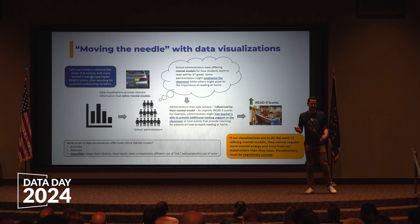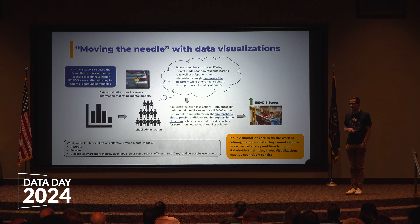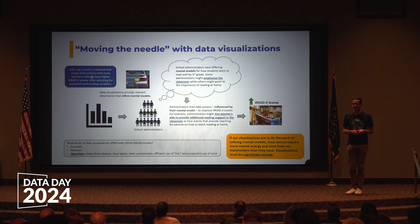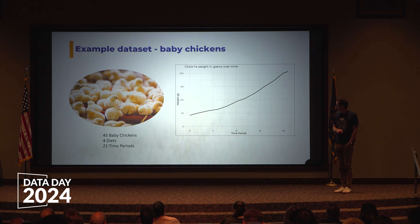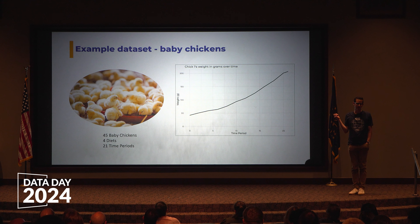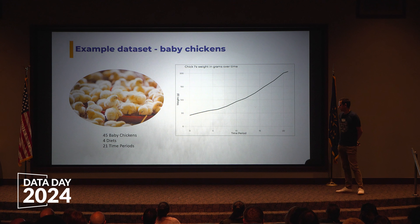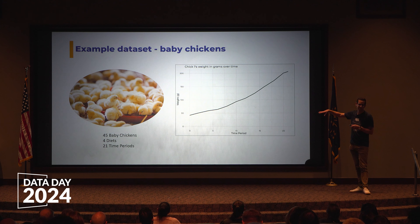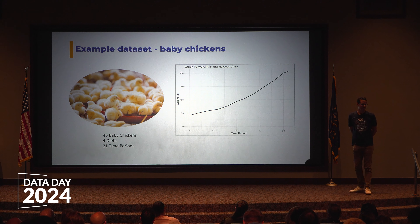Hopefully I've convinced you it's important that our data visualizations are digestible. Let's get into the weeds on these five characteristics. I'm sure there are others, and I'd be curious to hear if anyone has one I'm missing at the end. To give a bit of background on the dataset I'm using: there's a toy dataset preloaded in R that tracks the weight growth of baby chickens over 21 time periods. There are 45 baby chickens on four different diets. If we look at just chick one's weight over time, the line graph might look something like this.